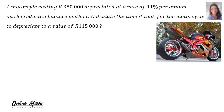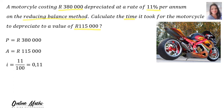Let's do an example. A motorcycle costing 380,000 rand depreciated at a rate of 11% per annum on the reducing balance method. Calculate the time it took for the motorcycle to depreciate to a value of 115,000 rand. The principal amount P is 380,000 rand. A, the end amount, is 115,000 rand. I, the rate, is 11% which equals 0.11. And n is what we're looking for.